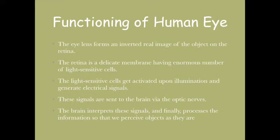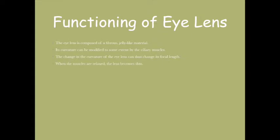The eye lens is composed of fibrous and jelly-like material. Its curvature can be modified to some extent with the help of ciliary muscles. The change in curvature of the eye lens can change the focal length. When muscles are relaxed, the lens becomes thin so its focal length increases.